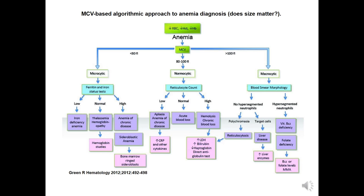Whenever there is anemia — decreased RBC count, decreased hematocrit, decreased hemoglobin level — and we look at the MCV: if MCV is normal, we call it normocytic anemia. In normocytic anemia, we check the reticulocyte count. If it is low, there may be aplastic anemia or anemia of chronic disease. If the reticulocyte count is normal, it is due to acute blood loss. If it is high, it is due to hemolysis or chronic blood loss.